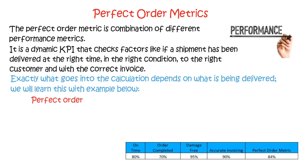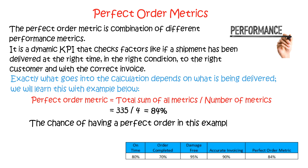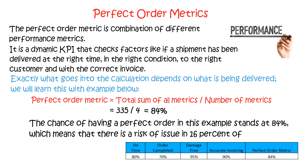The perfect order matrix is equal to the total sum of all metrics divided by the number of metrics. Therefore, the perfect order matrix is 84 percent. Although each individual area is performing fairly well, the chance of having a perfect order in this example stands at 84 percent, which means that there is a risk of an issue in 16 percent of orders.